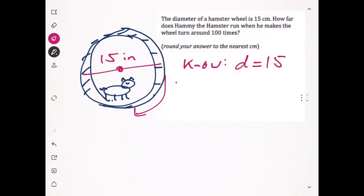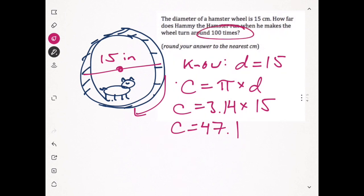If we're finding circumference, diameter is a good thing. Circumference equals pi times diameter, so circumference equals 3.14 times 15, and we get the circumference is 47.1. But that would be one trip around the wheel. Hammy the hamster is running around 100 times, so we need to multiply that by 100.